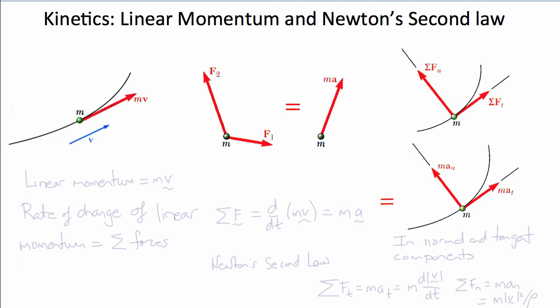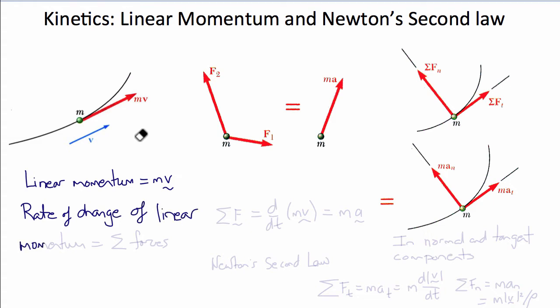This brings us to kinetics. Unlike statics, which only requires Newton's first and third laws, in dynamics we need Newton's second law. Recall that the linear momentum of a particle with mass m and velocity v is m times v. Newton's second law states that the rate of change of linear momentum is the sum of the external forces acting on the body, giving us that the sum of forces F equals d/dt of mv, and since mass is constant, this is mass times acceleration.